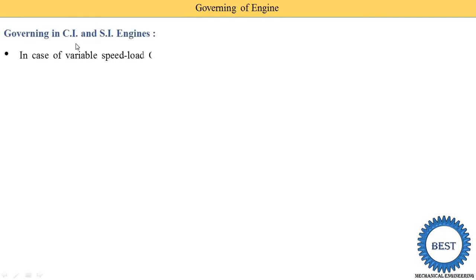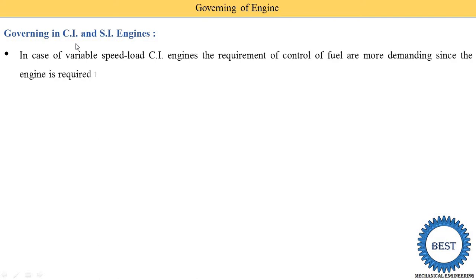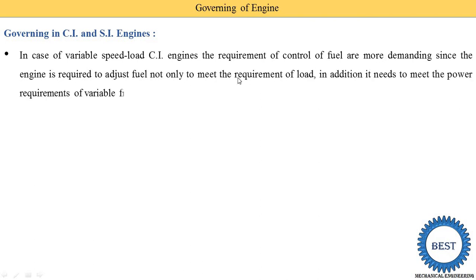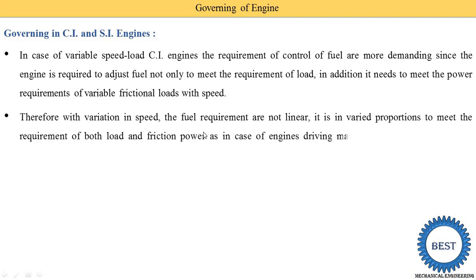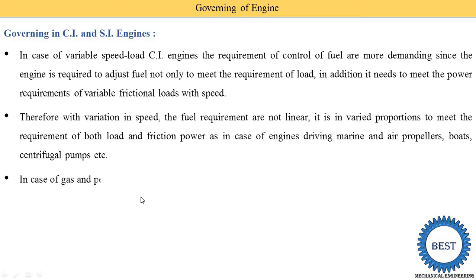Governing in CI and SI engines: In the case of a variable speed load CI engine, the requirement of fuel control is more demanding. The engine is required to adjust the fuel not only to meet the requirement of load, but also to meet the power requirement of variable frictional load with speed. In CI engines, we need to control the amount of diesel sprayed inside the cylinders. With variation in speed, fuel requirements are not linear - they vary in proportion to meet the requirement of both load and friction power, as in the case of engines driving marine propellers, boats, and centrifugal pumps.